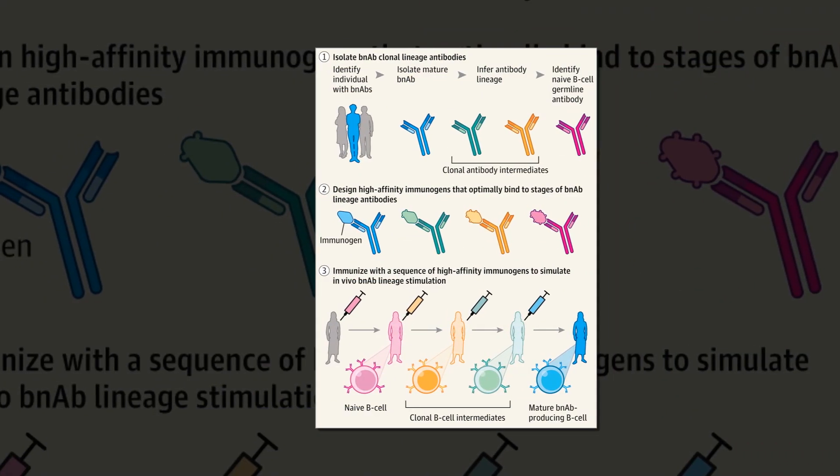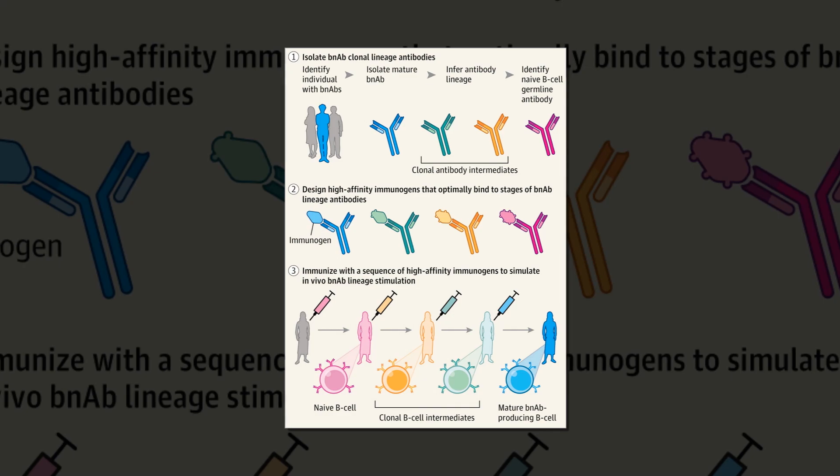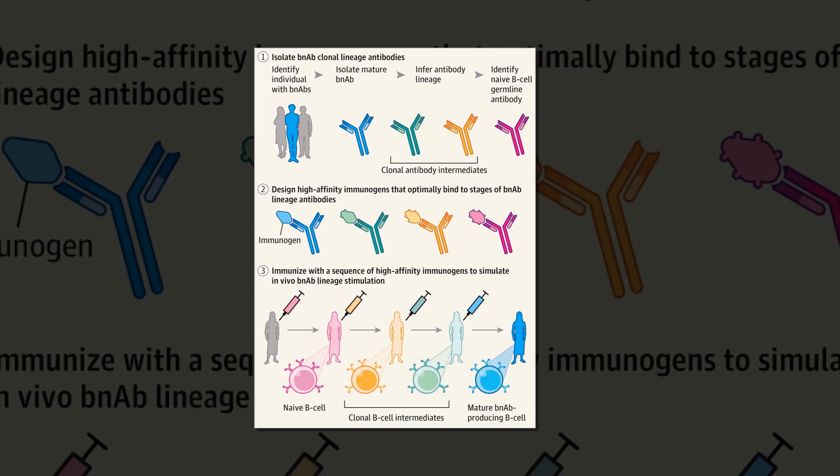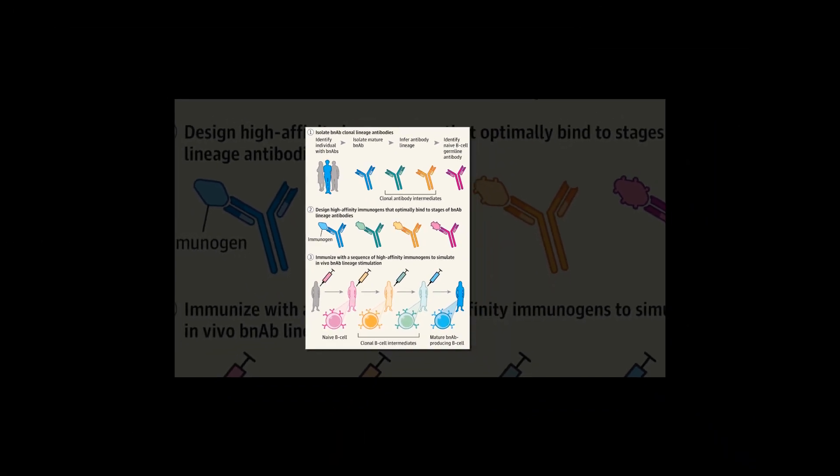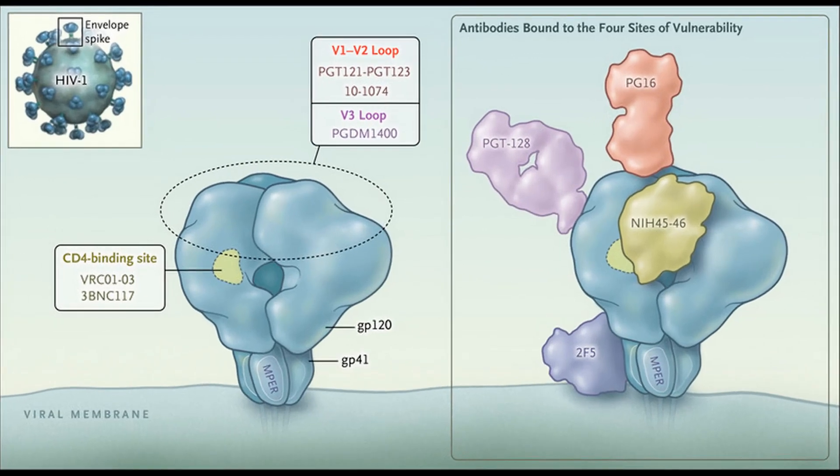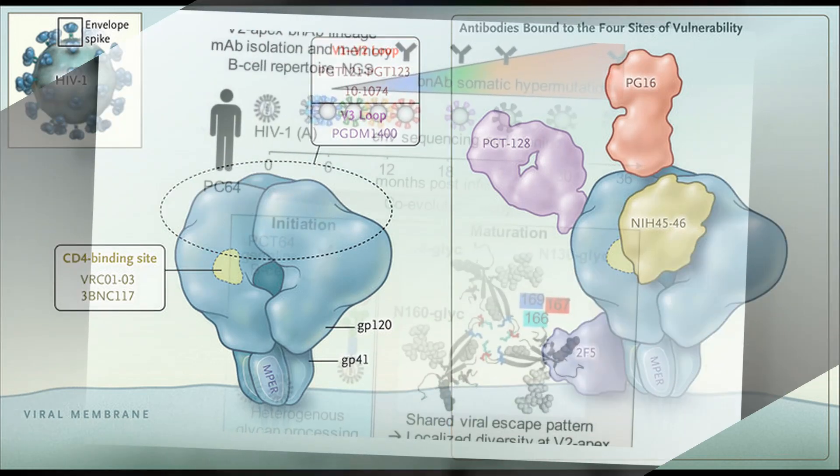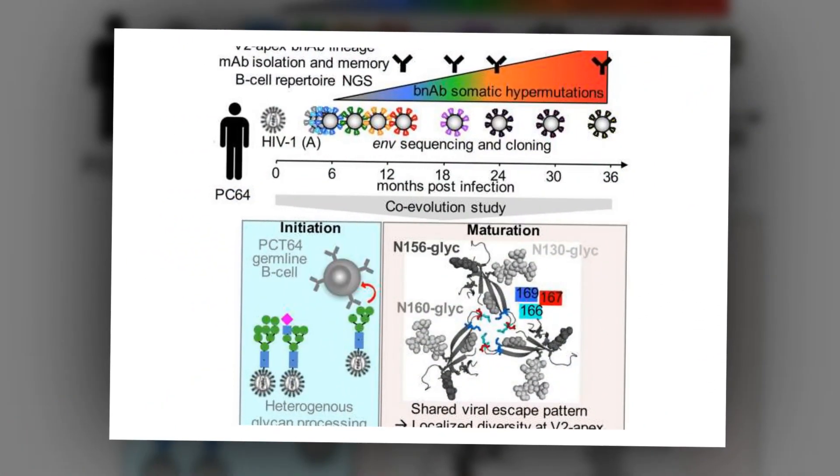Therefore, vaccines that allow the formation of BN-ABS in humans have not yet been developed. It is also unclear how long such broadly neutralizing antibodies remain in humans. However, this knowledge is extremely important in developing successful strategies for HIV-1 vaccination.